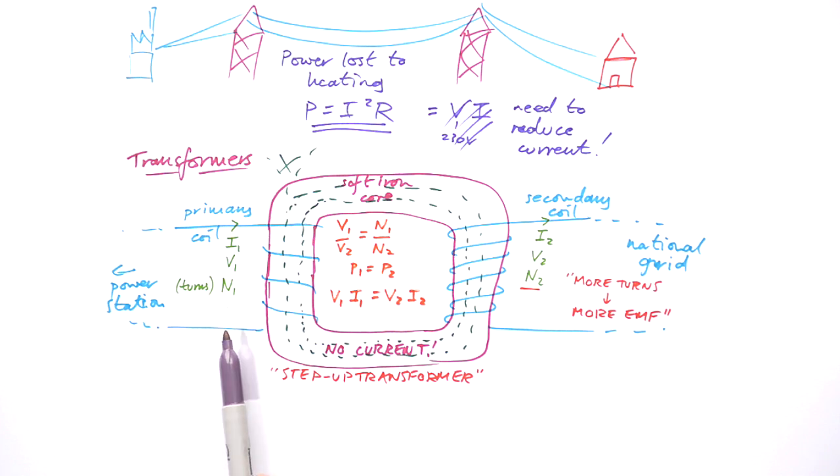If it was DC, then we would have this magnetic field being produced, but it wouldn't be changing. And because of Faraday's law, we know that if magnetic field isn't changing, then no EMF is going to be produced. So AC produces a fluctuating and alternating magnetic field that induces an alternating EMF and an alternating current in this secondary coil.